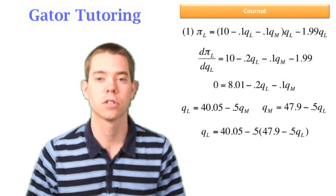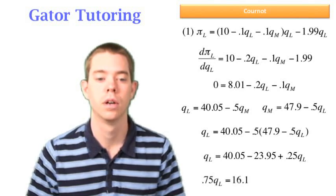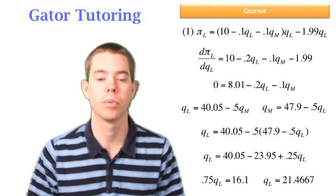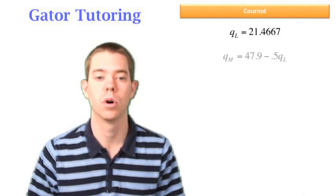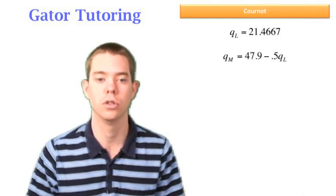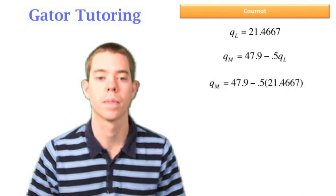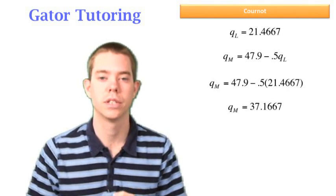So we plug in Matt's reaction function, and now we can solve for QL in scenario one. We find QL to be 21.4667. So we need to find QM, well we know Matt's reaction function, so we can use that and plug in QL. We can solve for QM to be 37.1667.